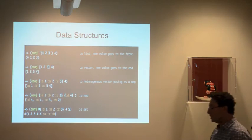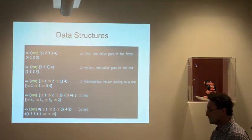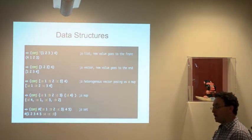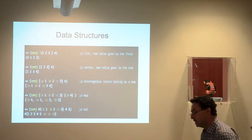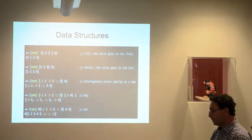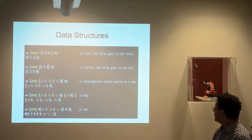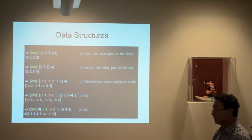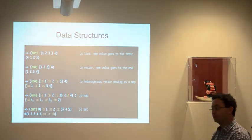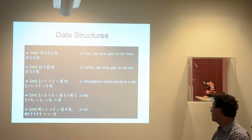Here's an example of the conj function. In a list the first element after the open parenthesis is the function, and everything after that is arguments. Conj adds a new value to a collection. Given a list (1 2 3) and the number 4, calling conj will put the new value at the front, giving you (4 1 2 3). If you use a vector [1 2 3] with conj and 4, the new value goes to the end, giving you [1 2 3 4].